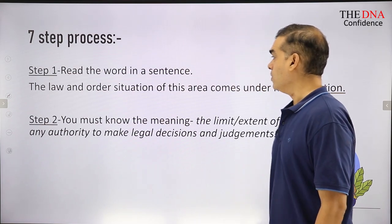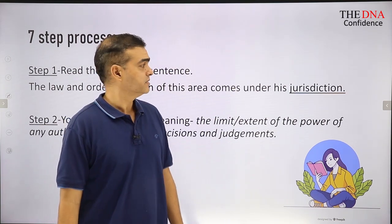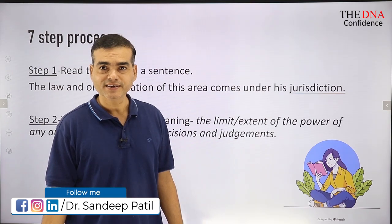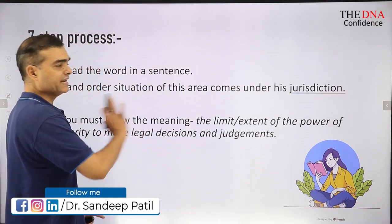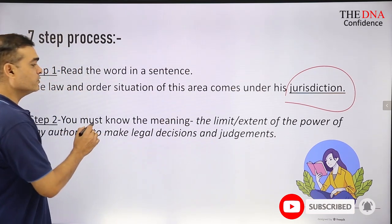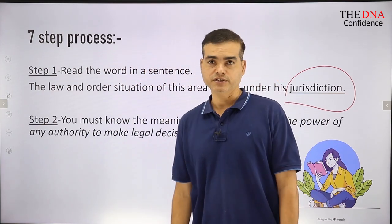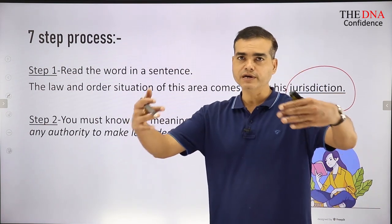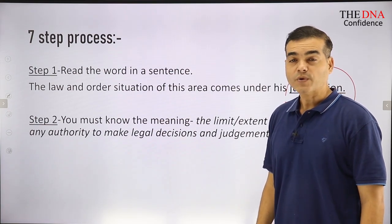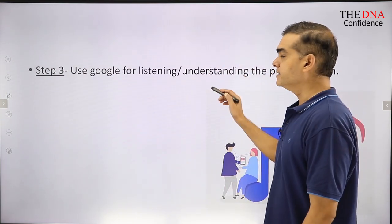Whichever word you don't know the pronunciation of, read it in a sentence. For example: 'The law and order situation of this area comes under his jurisdiction.' What is the pronunciation of 'jurisdiction'? Don't know, right? So step one: read the word. Step two: you must know the meaning. Once you know the meaning, then move to pronunciation. The meaning of 'jurisdiction' is your authority, your limit, your area — for example, if you are a collector, the area under your control is your jurisdiction.